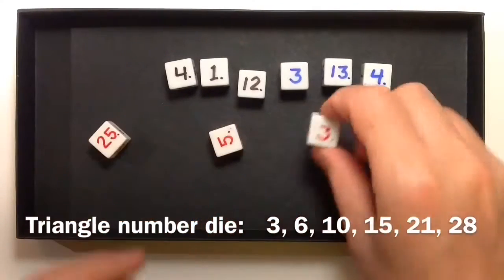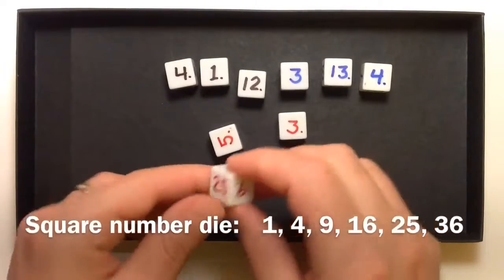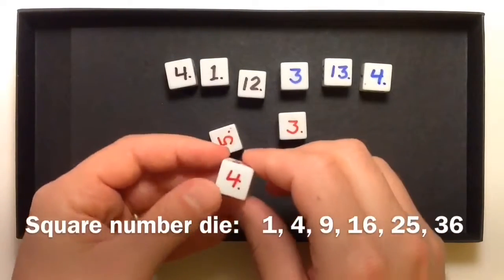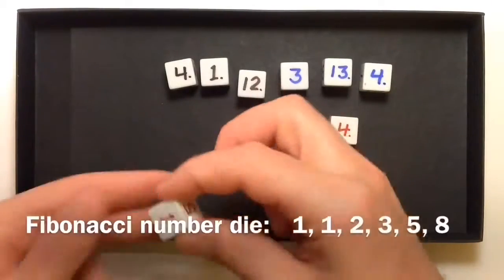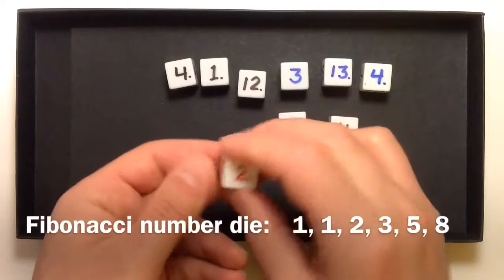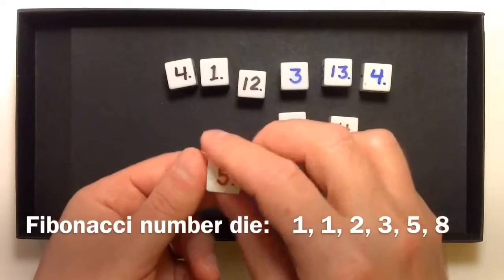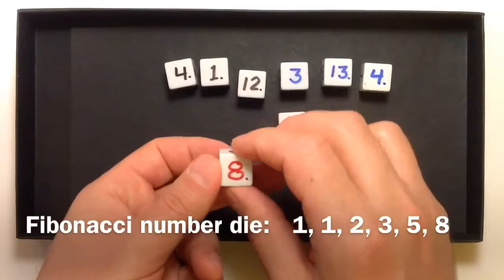which has the triangle numbers starting with the triangle number three, a square number die with perfect square numbers, and a Fibonacci die, which has the Fibonacci sequence: one and one, two, three, five, and eight.